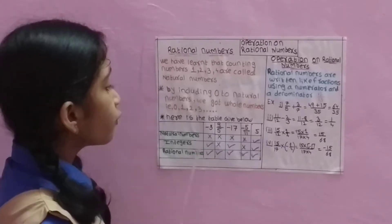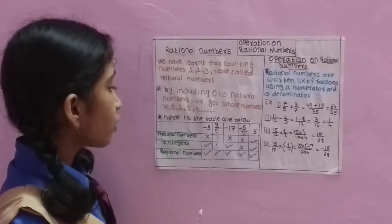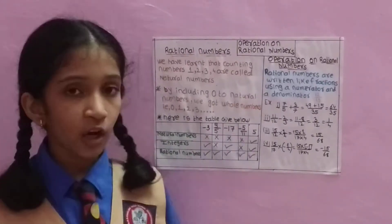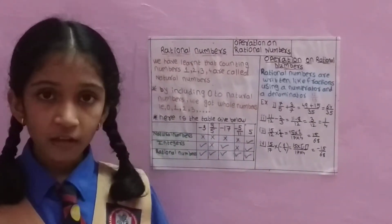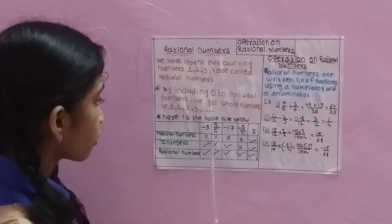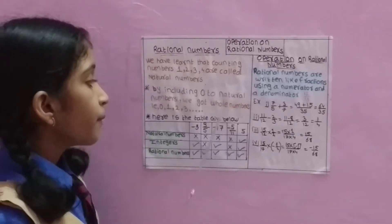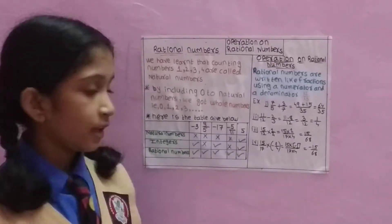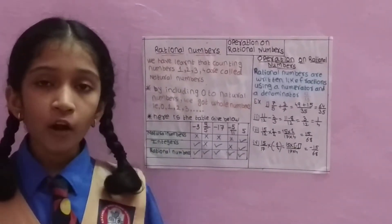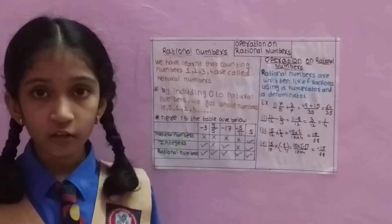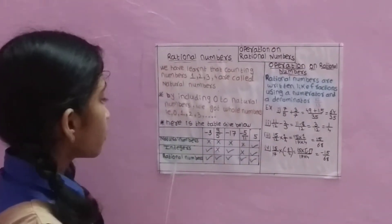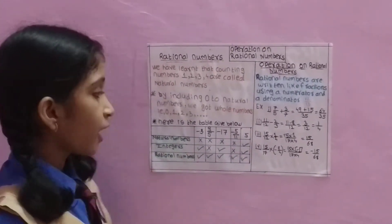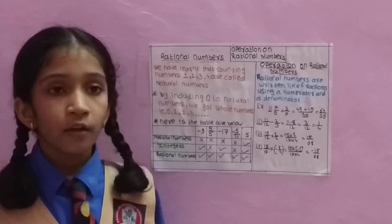3 upon 5 is not a natural number and it is not an integer — it is a rational number. Minus 17 is not a natural number; it is an integer and it is a rational number.